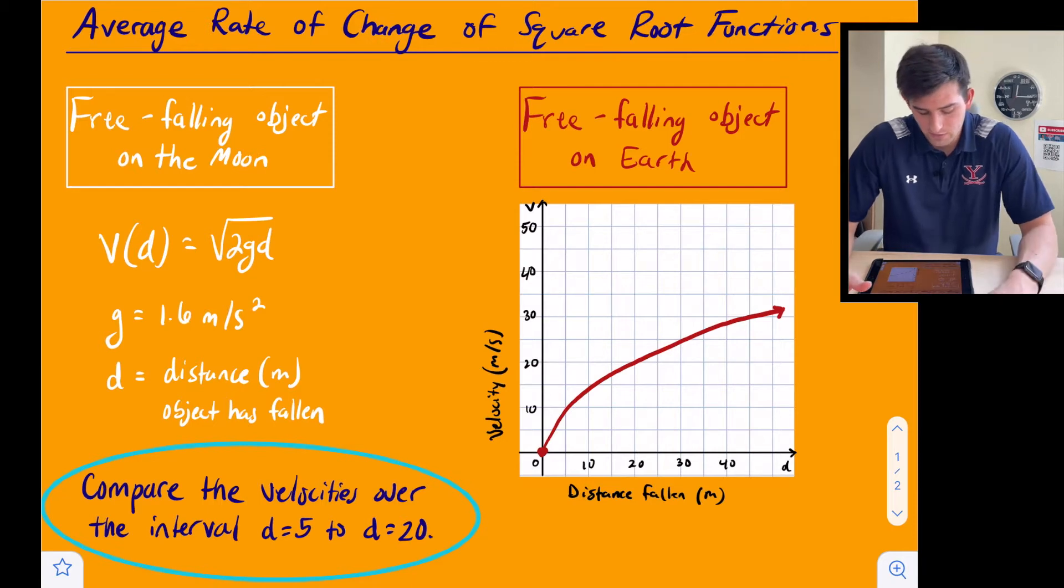On the left side of the screen we have a free falling object on the moon represented by an equation. On the right side we have a free falling object on earth represented by a graph. We're going to look at two different representations today and compare their average rates of change.